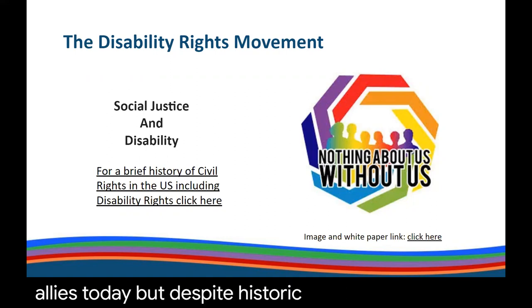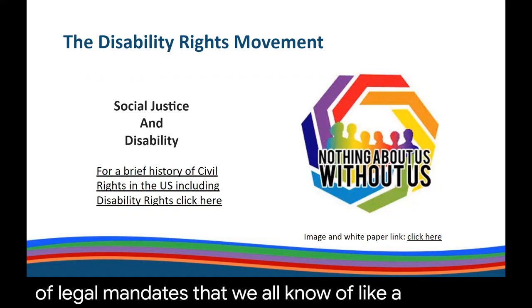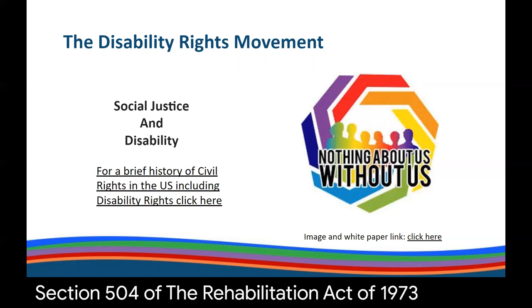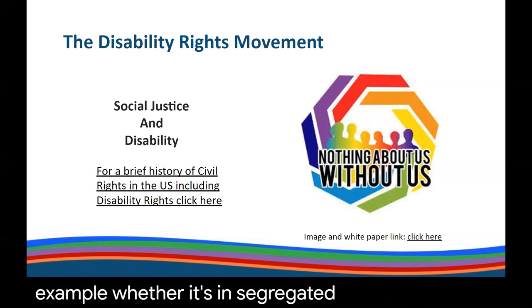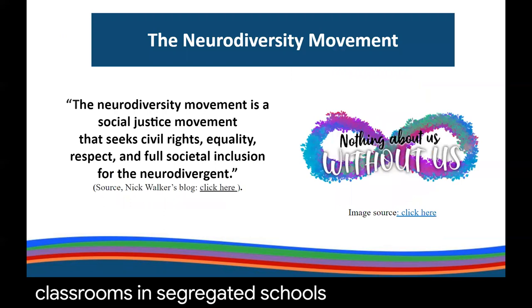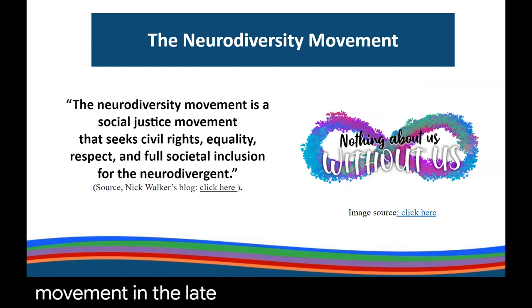Despite historic victories in the form of legal mandates like ADA and Section 504 of the Rehabilitation Act in 1973, many disabled individuals remain segregated today — whether in segregated special education classrooms, in their homes, or in segregated schools. Building on the disability rights movement, the neurodiversity movement began with the autism rights movement in the late 1990s.